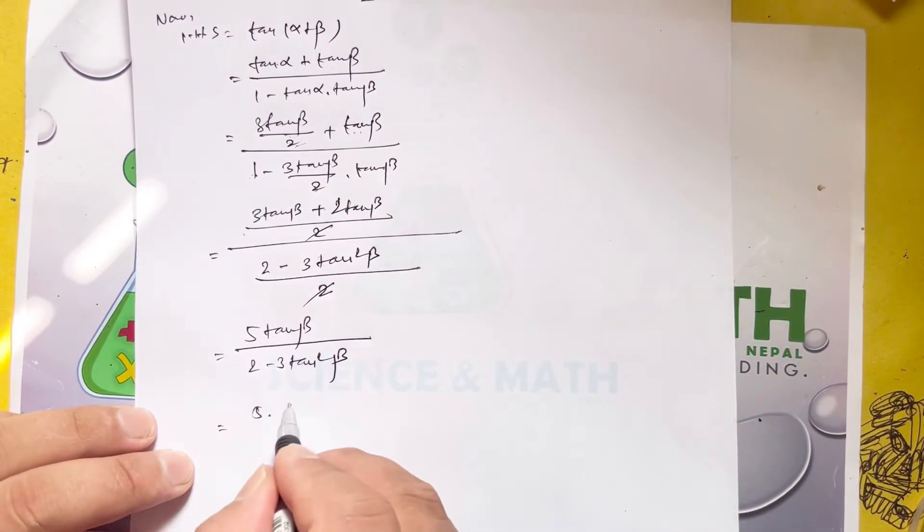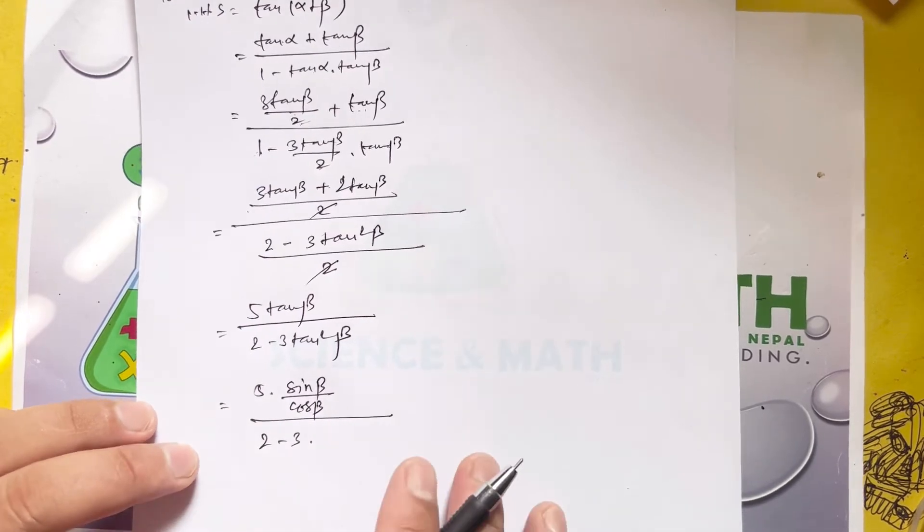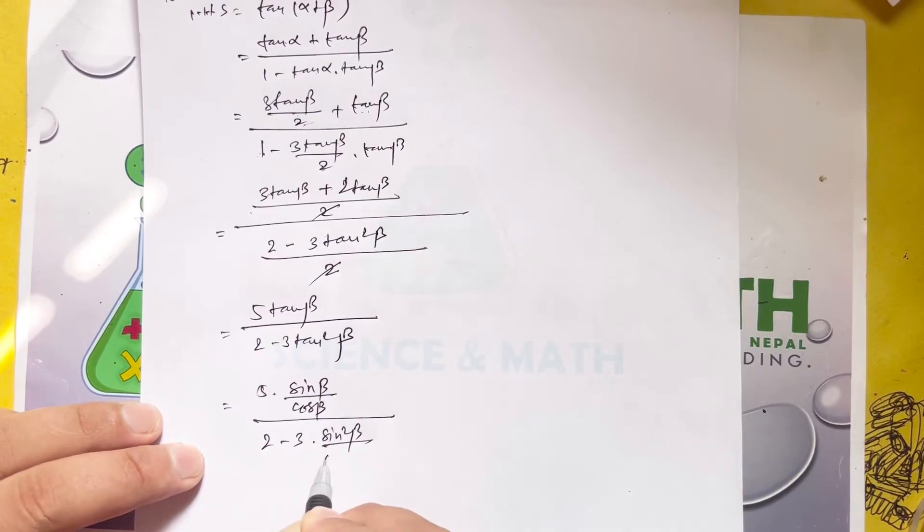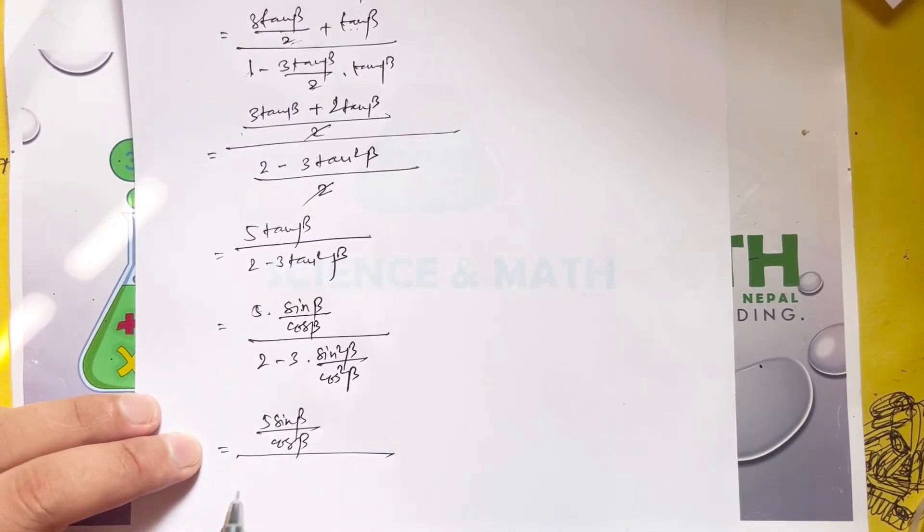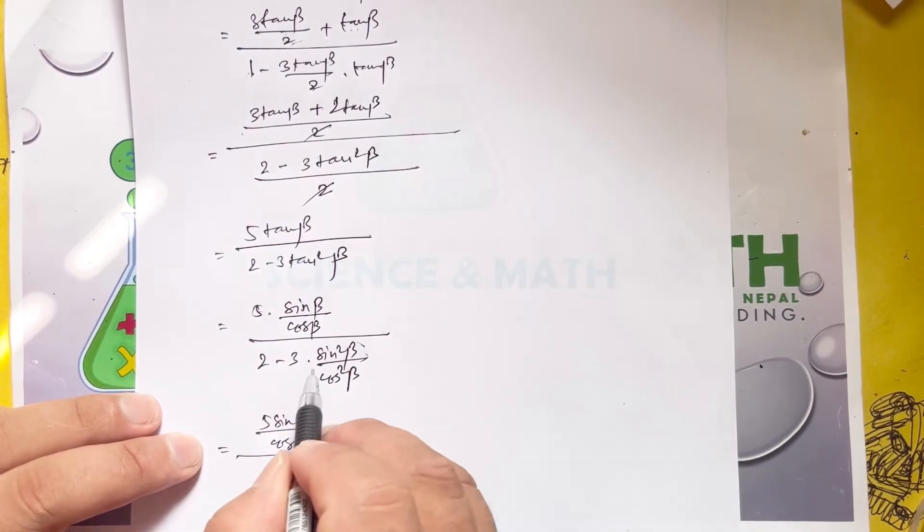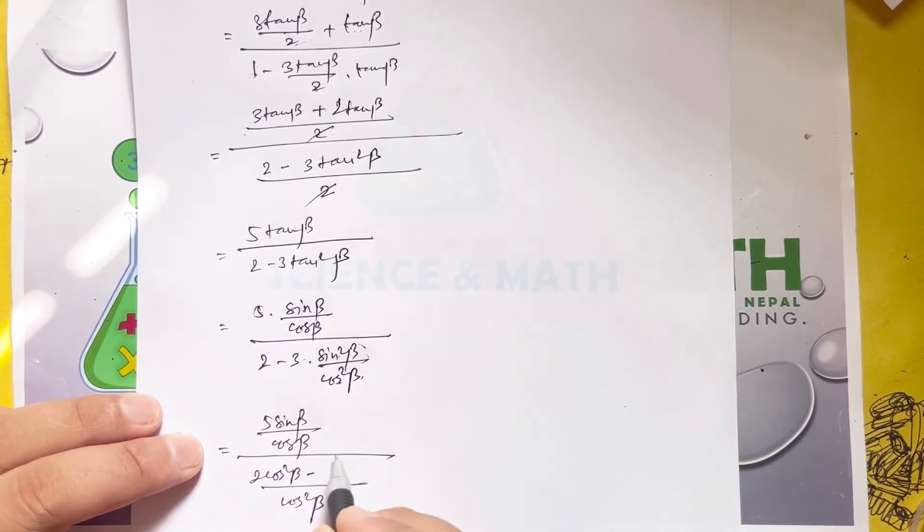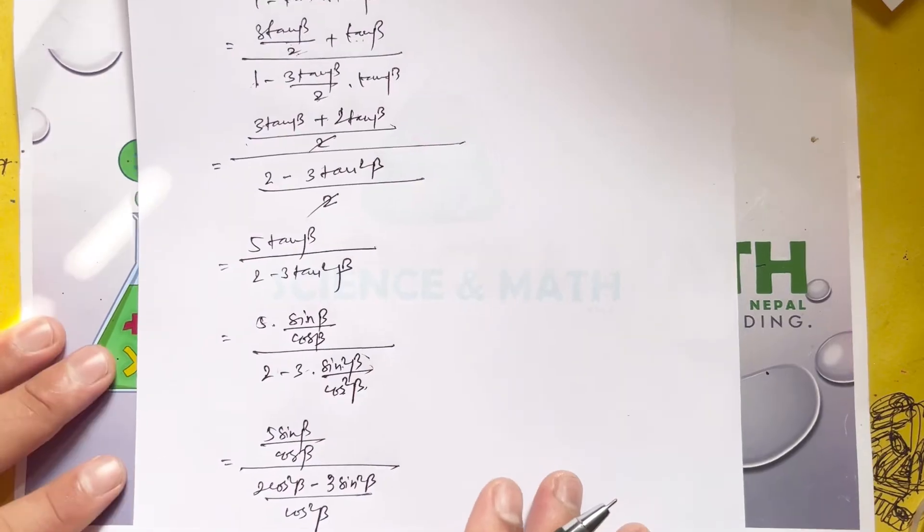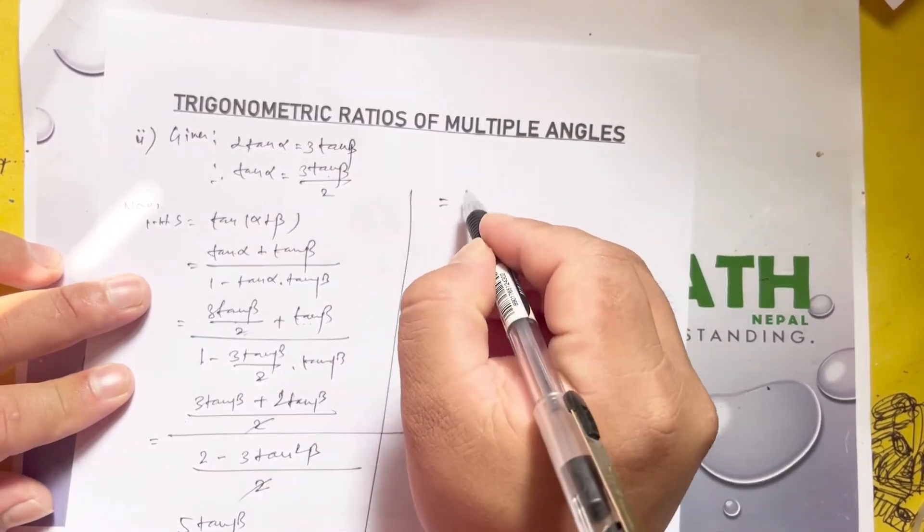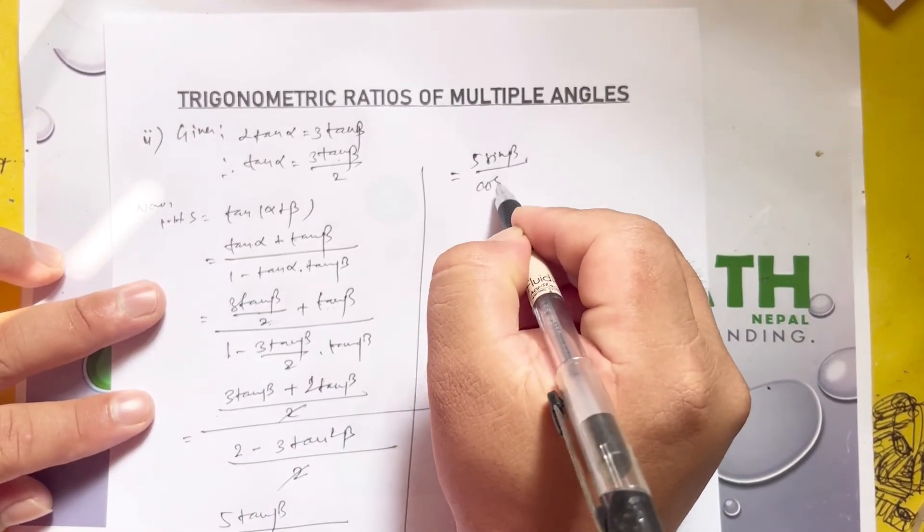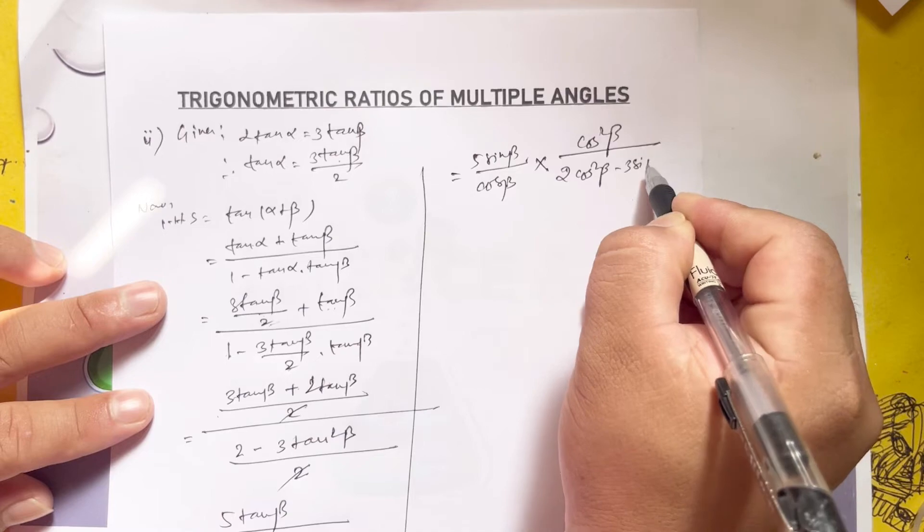Substituting tan alpha equals 3 tan beta by 2, this becomes 3 tan beta by 2 plus tan beta, divided by 1 minus 3 tan squared beta by 2. Converting to sine and cosine form, we get 5 sine beta divided by cosine beta, over 2 cos squared beta minus 3 sine squared beta.